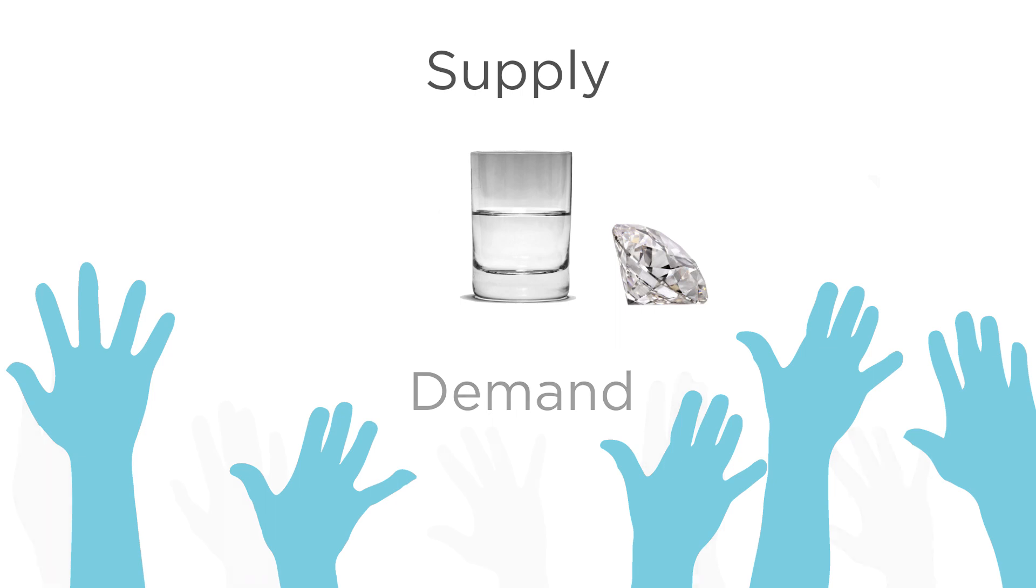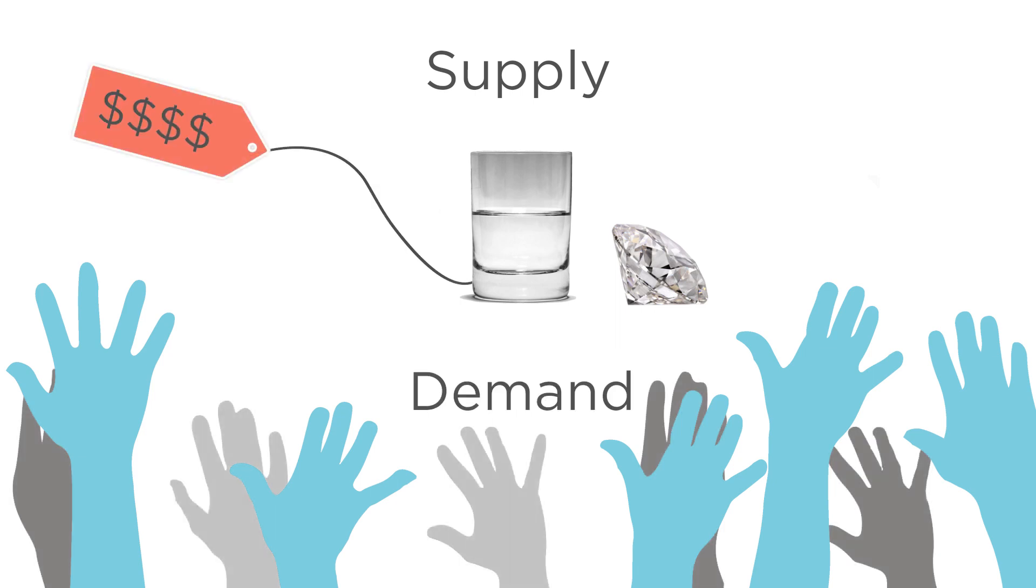What determines the price of a good is both how much people want it, which we call the demand for the good, and how much of it is available, which we call the supply. The greater the demand, the higher the price. The greater the supply, the lower the price.